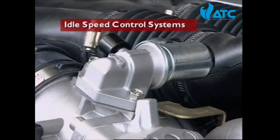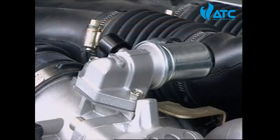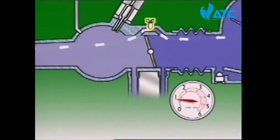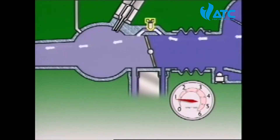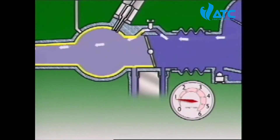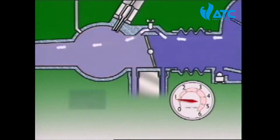This section examines idle speed control systems. Base engine idle speed may be set by adjusting a screw on the throttle body. This sets how much air flows through a bypass passage from the intake air side to the manifold side of the throttle body.